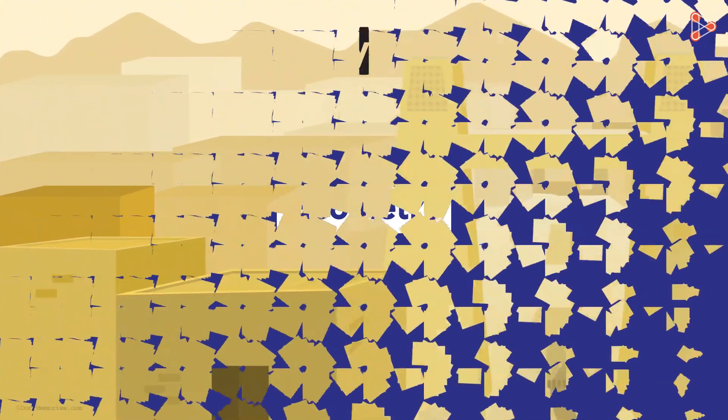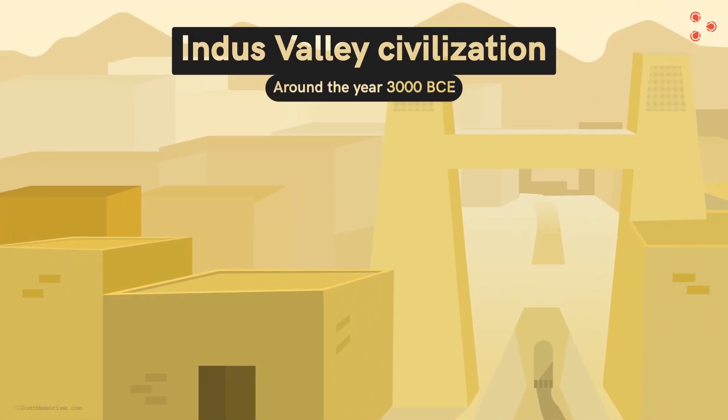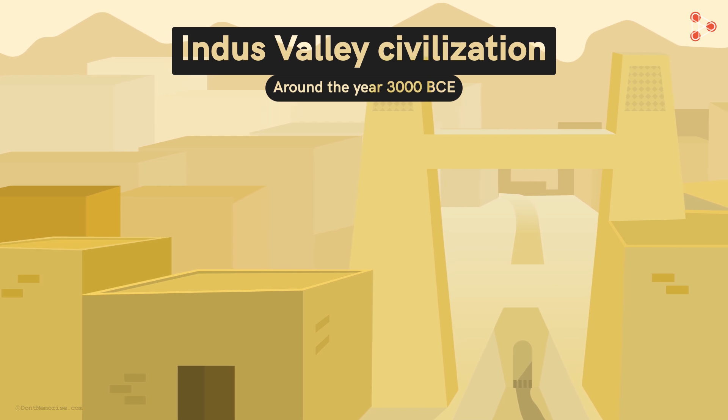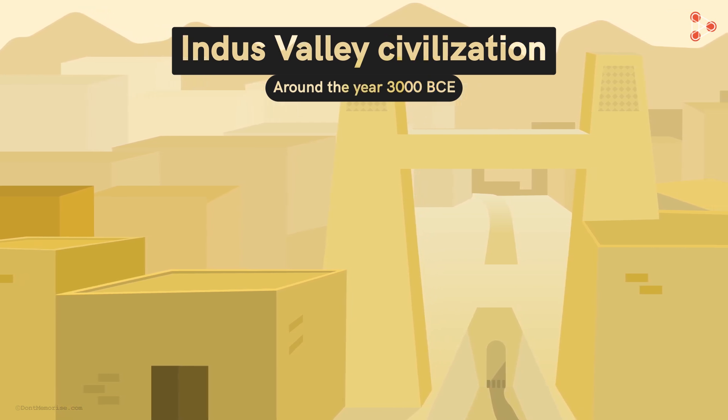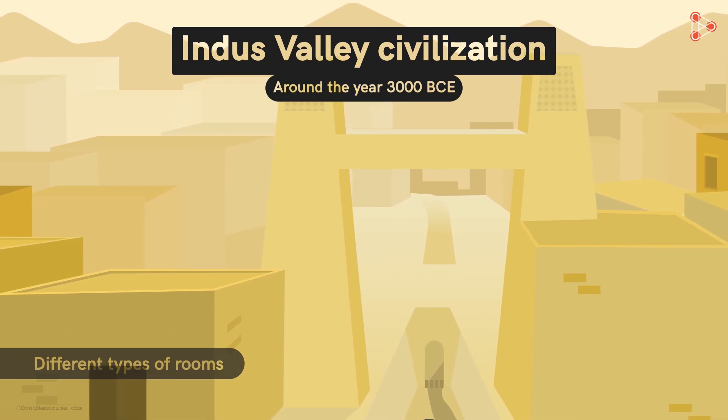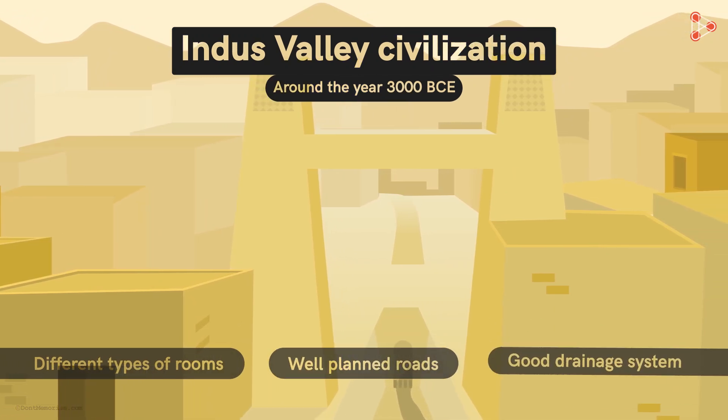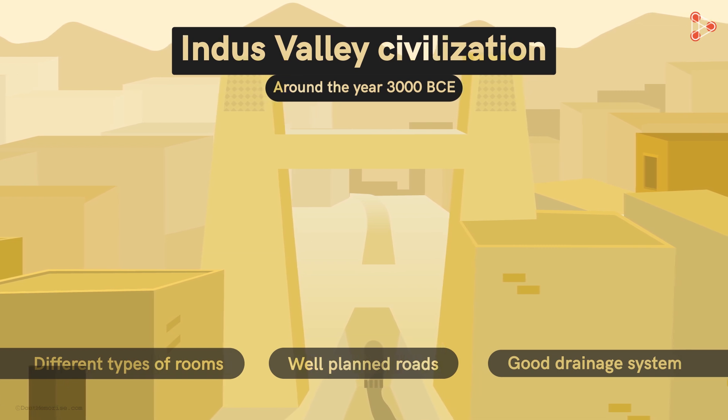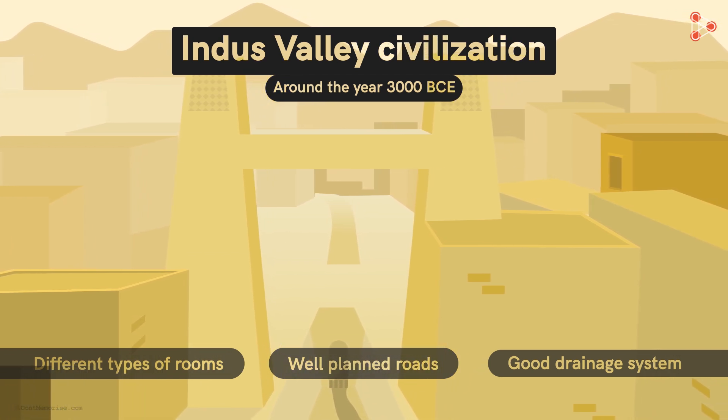The Indus Valley civilization around the year 3000 BCE also made use of geometry. Their cities were well-planned, houses had different types of rooms, well-planned roads and a good drainage system. This was not possible if they did not know the use of geometry.